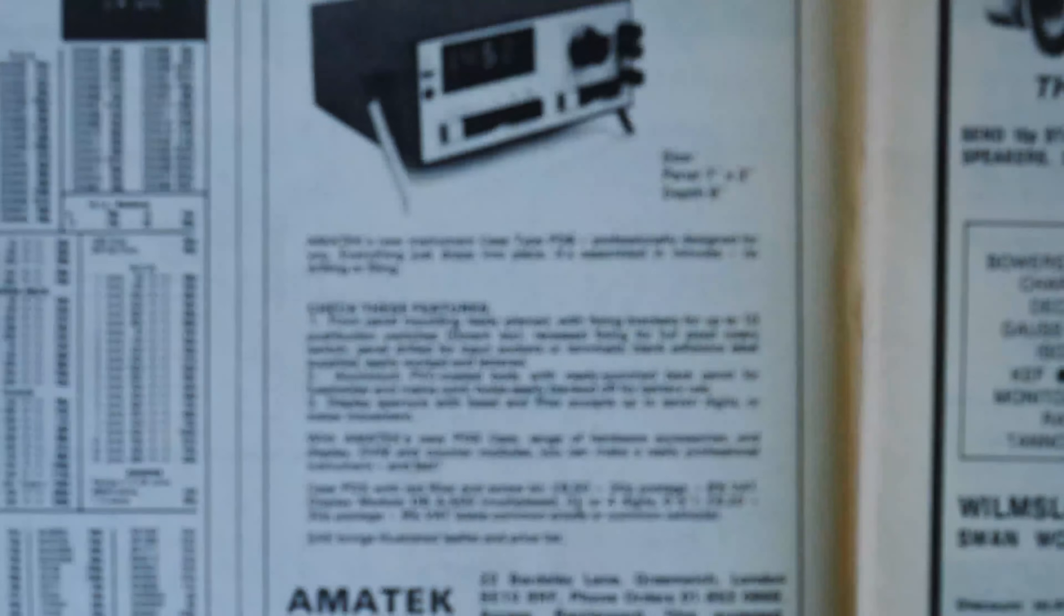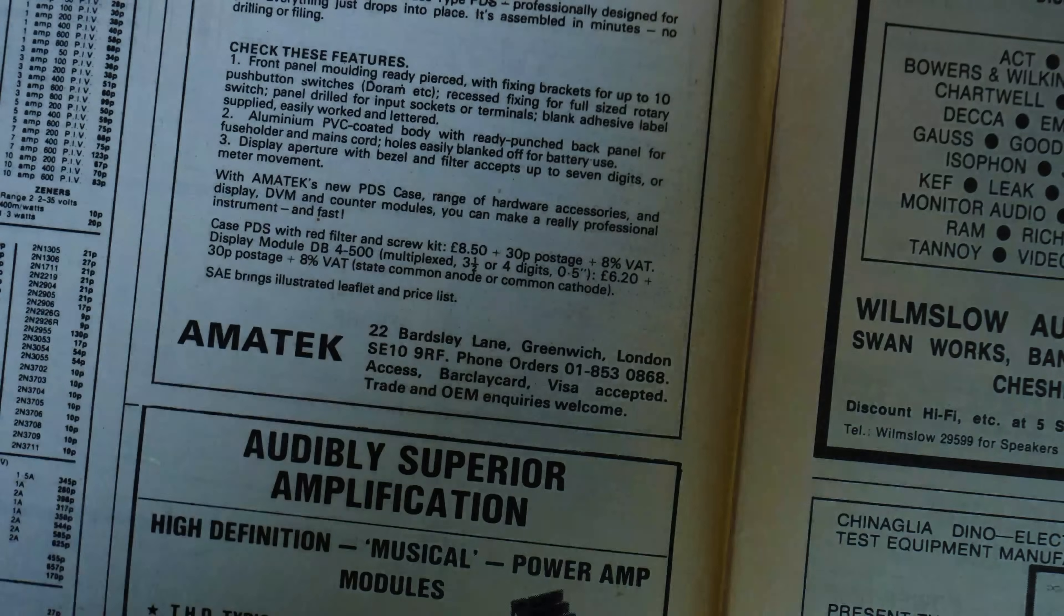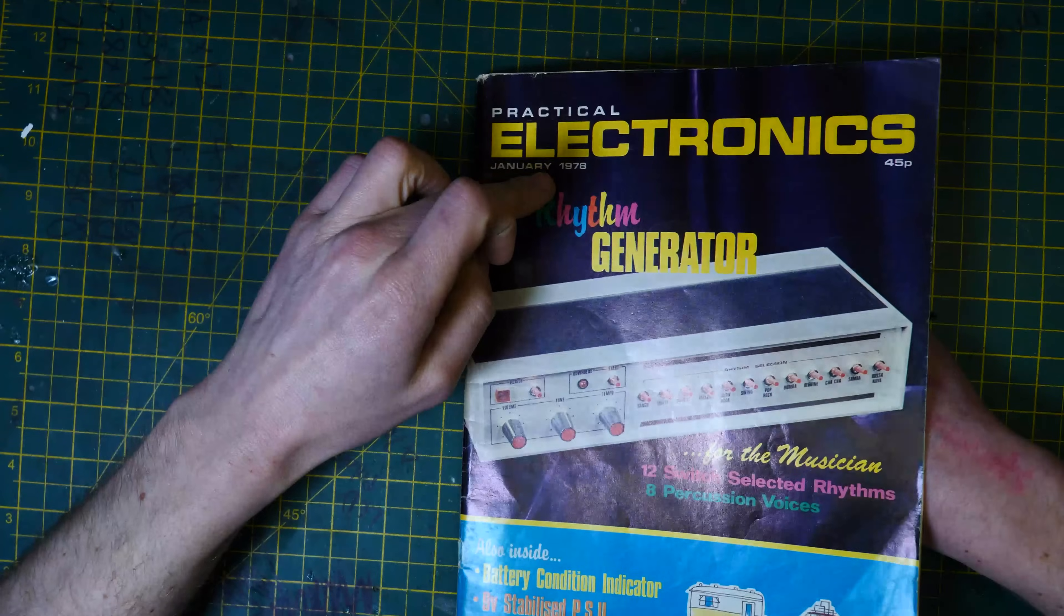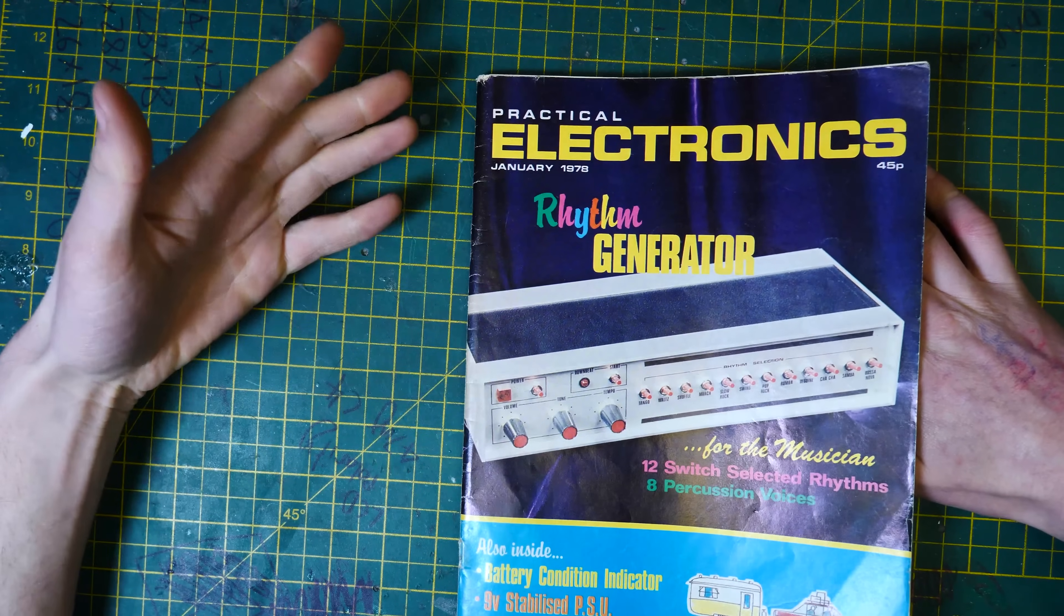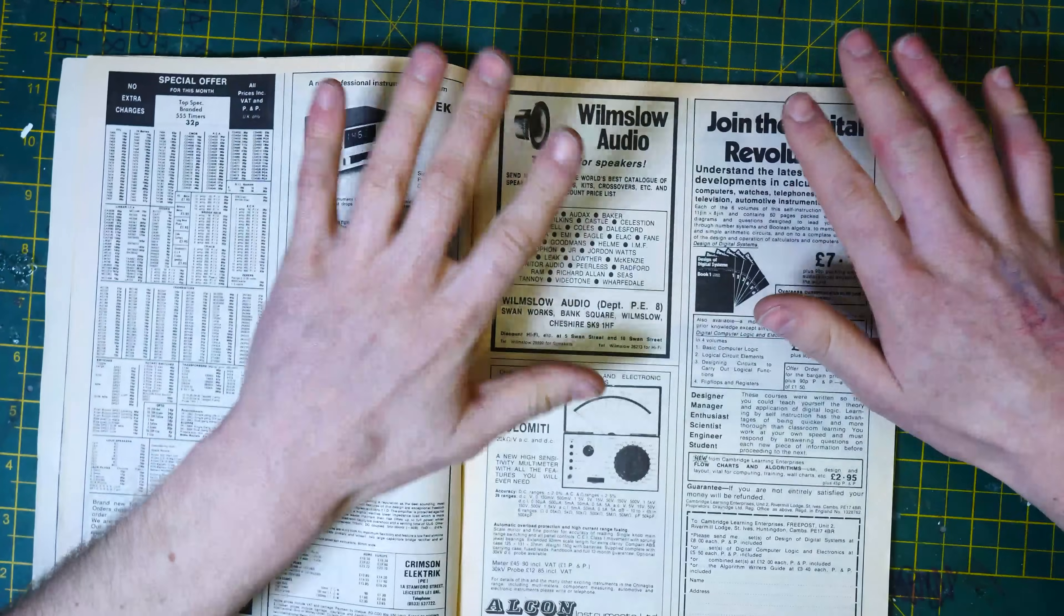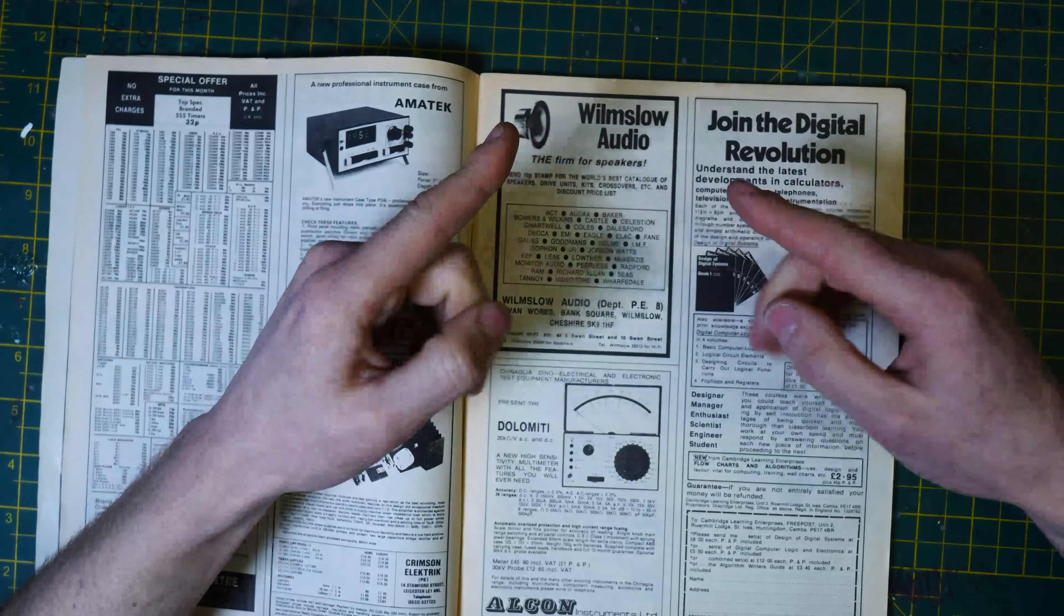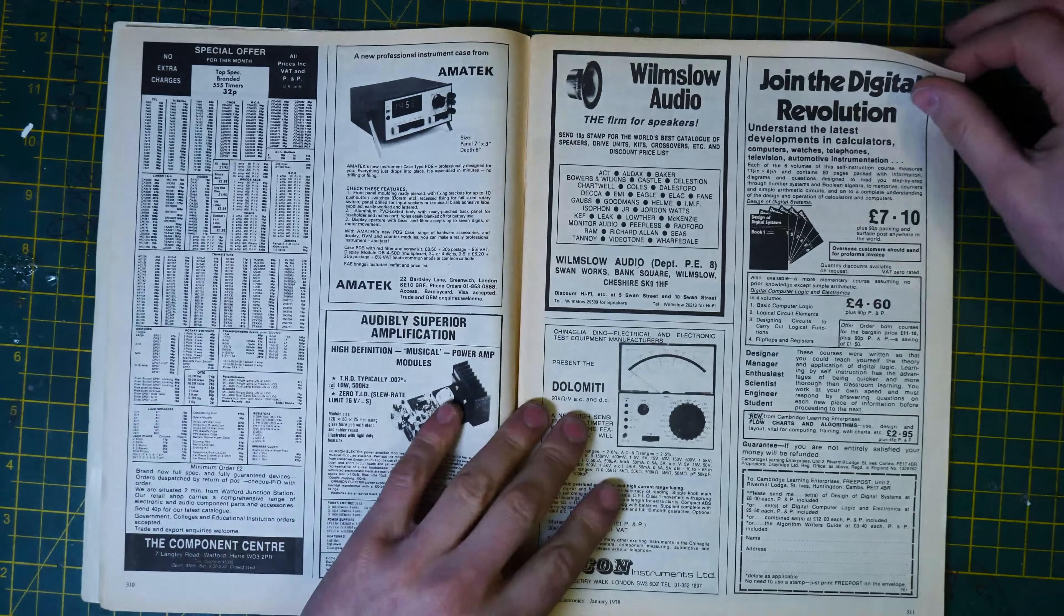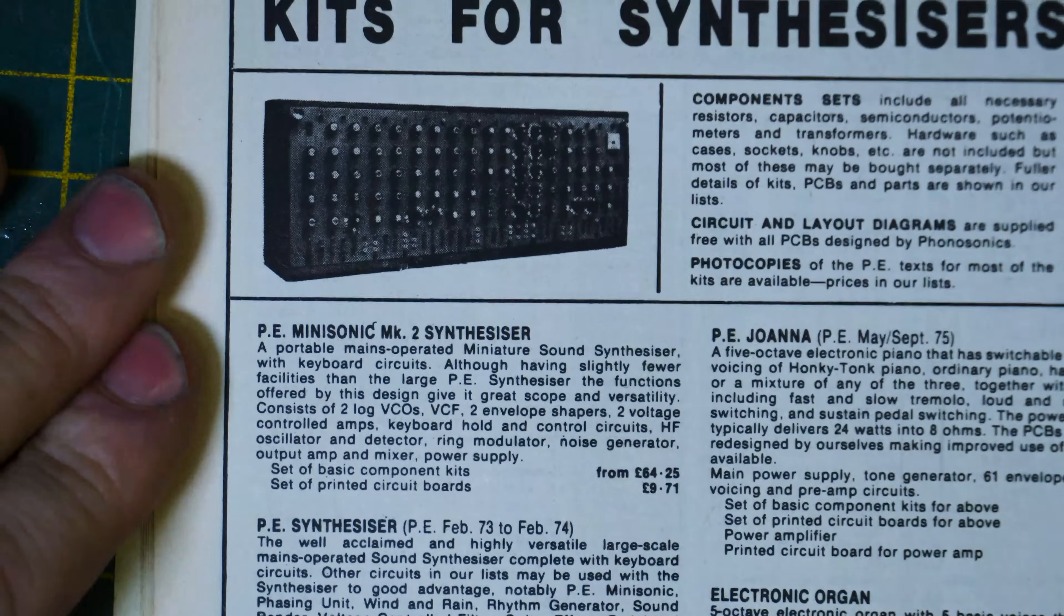We've got the Amatec. This is a nice frequency counter. It's got Nixie tubes in it. It looks really nice. And a little bit of a spoiler, because remember, this is 1978. So this is around when home computers were starting to kick off. Like the Commodore PET, the Apple II, things like that. There's no sign of it in here. However, when you skip along another year or two, it's full, absolutely full of computers.